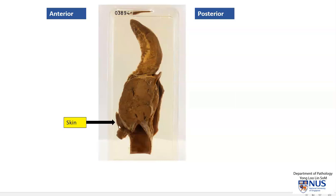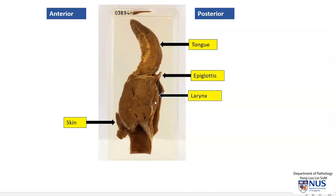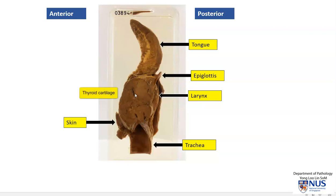We have a little strip of skin here, and here we can see the tongue, the epiglottis, the larynx in this region, and the trachea here inferiorly. There is a very large tumour arising in the thyroid and going beyond it. This is likely to be part of the thyroid cartilage, and you can see the tumour has actually gone all the way through and posterior to it.